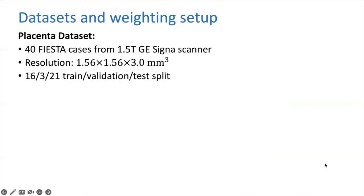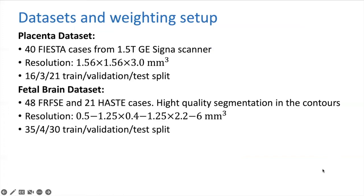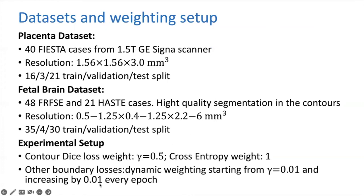In this work, we used a placenta dataset of 40 Fiesta sequence cases and a fetal brain dataset of 48 FRFS and 21 Haste sequence cases. In all experiments, we used a contour dice loss weight of 0.5 and a cross entropy weight of 1. For other boundary losses, we used a dynamic weight similar to what was reported in previous works.